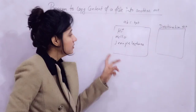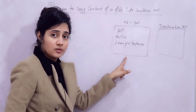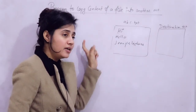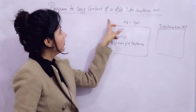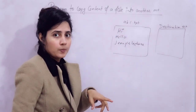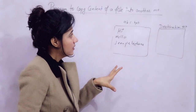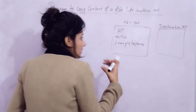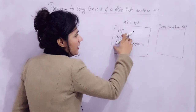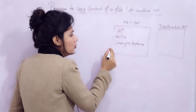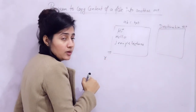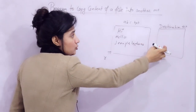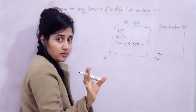The approach is: first understand the question, then think the logic, then start writing the program. To copy content from one file to another, we open the source file in read mode and the destination file in write mode. Then, character by character, we read from the source and copy each character into the destination file — until we reach end of file.